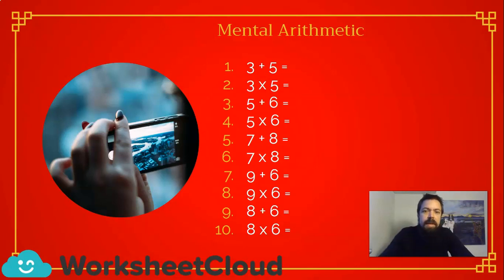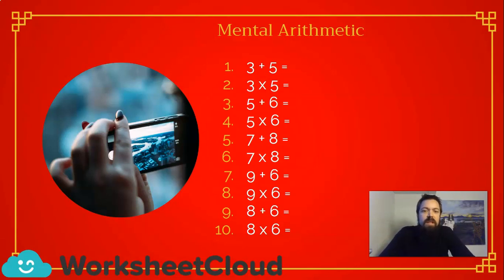Just like that, times up. So you'll see I paired them — you first got plus, and then times of the same things. So 3 plus 5 is 8. 3 times 5 is 15. 5 plus 6 is 11. 5 times 6 is 30. 7 plus 8 is 15. 7 times 8 is 56. 9 plus 6 is 15. 9 times 6 is 54. 8 plus 6 is 14. 8 times 6 is 48.